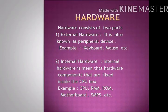The next slide is about hardware. Hardware consists of two parts. Number one: external hardware, also known as a peripheral device — examples include keyboard, mouse, etc. Number two: internal hardware, meaning hardware components that are fixed inside the CPU box — examples include CPU, RAM, ROM, motherboard, SMPS, etc.